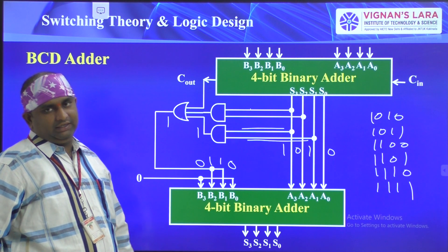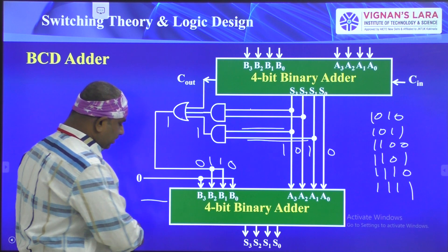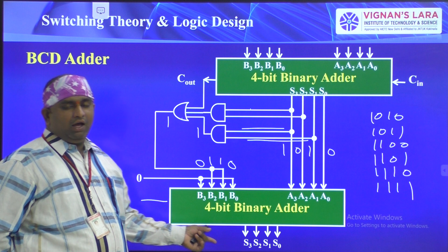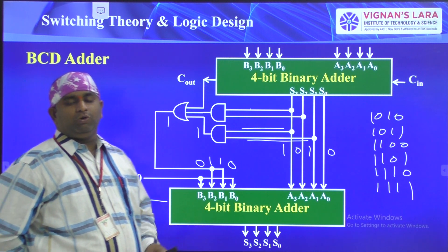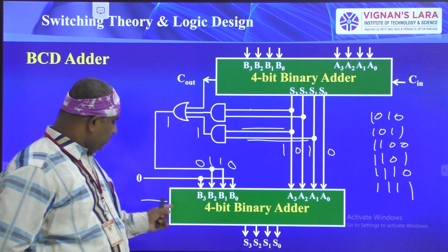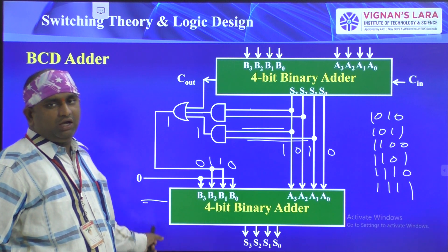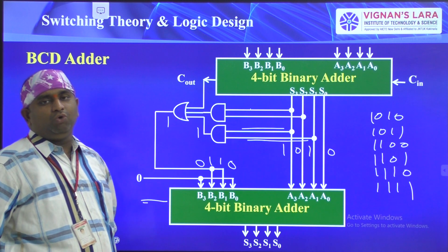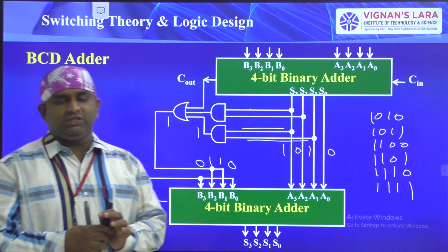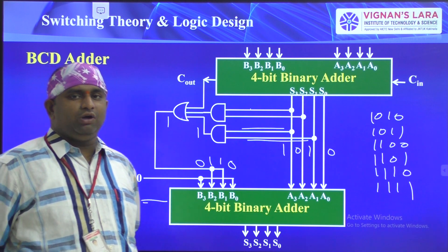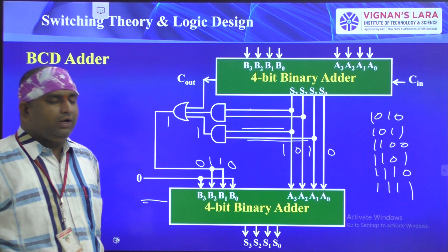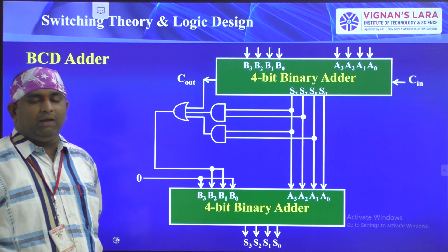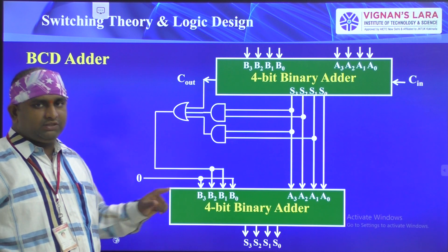The final corrected sum appears at the output of the second adder, along with any carry to the next BCD group. This is the BCD adder — a simple but important concept. You must remember the strategy of binary-coded decimal addition. Please note down this diagram as it is very important.